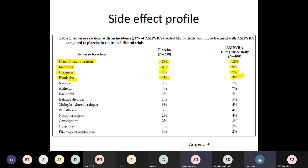This is the side effect profile of Dalfampridine. Dalfampridine 10 mg twice daily was studied in 400 patients versus placebo in 238 subjects. Adverse reactions with incidence of more than 2% were documented. The commonest adverse reaction was urinary tract infection, seen in about 12% versus 8% placebo. Others included insomnia (9% vs. 4%), dizziness (7% vs. 4%), headache (7% vs. 4%), nausea, asthenia, back pain, balance disorder, paresthesia, nasopharyngitis, constipation, dyspepsia, and pharyngolaryngeal pain.